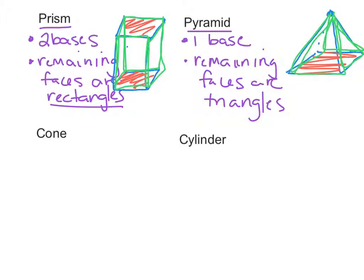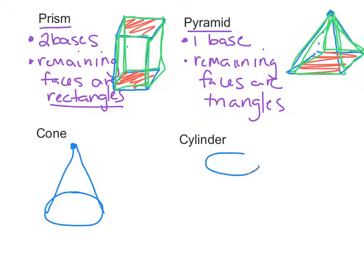A cone — just to give you an image — has one circular base and then it comes to a point at the top. So it's kind of more similar to a pyramid than a prism, but it's really kind of its own classification. And cylinders have two bases, so they're a little bit more similar to prisms.